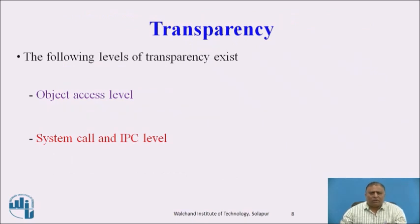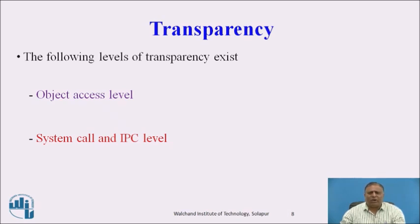Transparency: The following levels of transparency exist — object access level, and system call and IPC level. In object access level, the minimum requirement is to support non-preemptive process migration; access to objects is done in a location-independent manner. In system call and IPC level, a migrated object does not depend on its original node. All system calls including IPC are location-independent. This transparency is used to support preemptive migration. IPC transparency is needed for transparent redirection of messages.